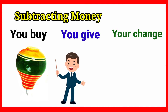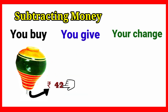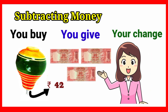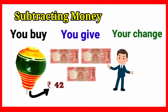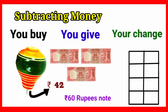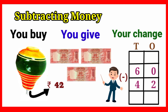Children, next see this — another image. Look at the wooden spinning top image. You buy it. The spinning top's cost is 42 rupees. You give: 20 rupees note, then another 20 rupees note, then another 20 rupees note — totally 60 rupees you are giving. The spinning top costs 42 rupees.